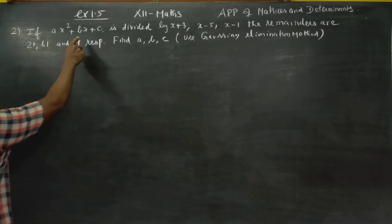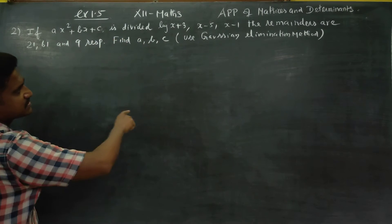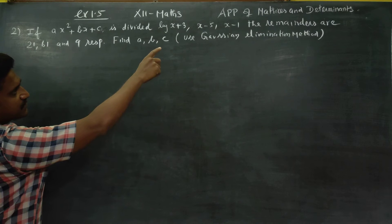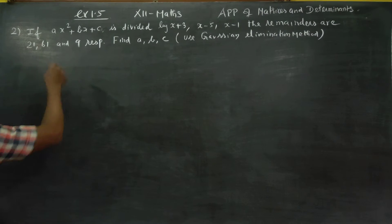When ax² + bx + c is divided by (x+3), (x-5), and (x-1), the remainders are given.